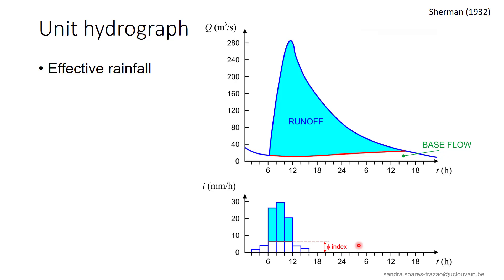The index phi is defined as the average intensity above which rainwater directly turns into runoff flow. Intensities below phi only contribute to moisture refill and underground flow. Using this index, we can retain only the net rain from a given rainfall event. The index phi is considered as constant for a given catchment and a given type of rain. However, the difficulty or inaccuracy of the method for establishing the net rain may constitute a weakness of the unit hydrograph method that has to be kept in mind.